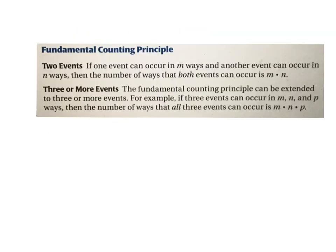This is the best way - it's called the Fundamental Counting Principle. If one event can occur in m ways and another event can occur in n ways, then the number of ways both can occur is m times n - you just multiply your choices. In that last problem, three kinds of snowboards times two kinds of boots equals six. If there are three or more events, it can be extended: m times n times p. You just multiply all the outcomes.